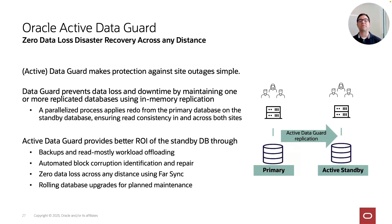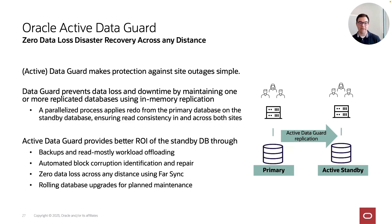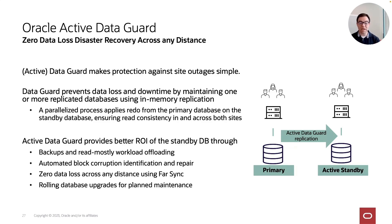Active Data Guard provides better return on investment through backups and read-mostly workload offloading. Data Guard and Active Data Guard provide a block-identical copy of the database, so you can use the Active Standby for backups applicable to the primary if needed. The Active Standby in an Active Data Guard environment is open for read-mostly access — you can run reports against it. You can also perform certain updates via DML Redirection, which redirects those updates against the primary and propagates them back to the standby via redo.